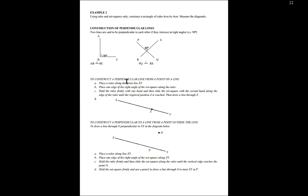There are two different approaches to constructing perpendicular lines. The first is to construct a perpendicular line from a point on a line. Here is a line XY and the point Z is directly located on the line. The procedure: A — place a ruler along the given line XY. B — place one edge of the right angle of the set square along the ruler. C — hold the ruler firmly with one hand and slide the set square with the other hand along the edge of the ruler until the required position Z is reached, then draw a line through Z.